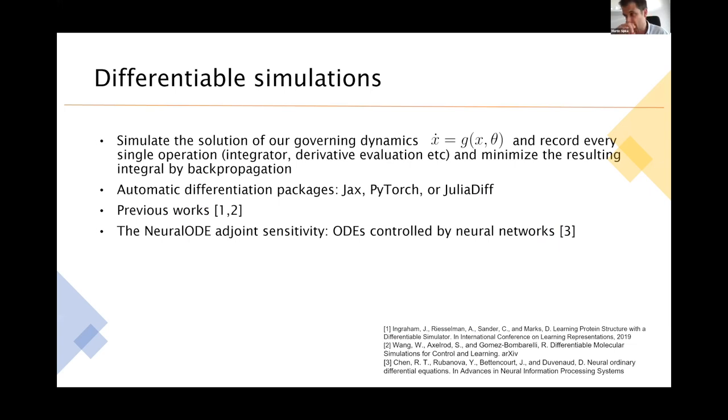So why are we doing this and why we are actually able to do it? Because it's possible now and it can be used for much more complicated problems than what I just talked about. And why can we do it in the first place is because we have this automatic differentiation. So we have packages like JAX and PyTorch or Julia, which weren't here before.